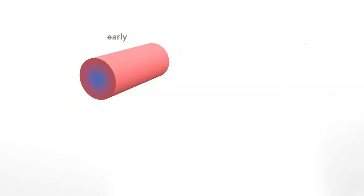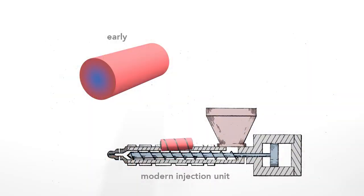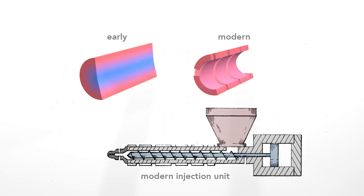In the earlier plunger-style machines, plastic filled completely the cylindrical barrel. But the plastic was not at a uniform temperature. The reciprocating screw overcomes this in three ways. First, in modern units, the plastic fills only the space around the shaft of the screw. This eliminates the cooler central region, leaving a thinner, evenly heated layer of plastic.